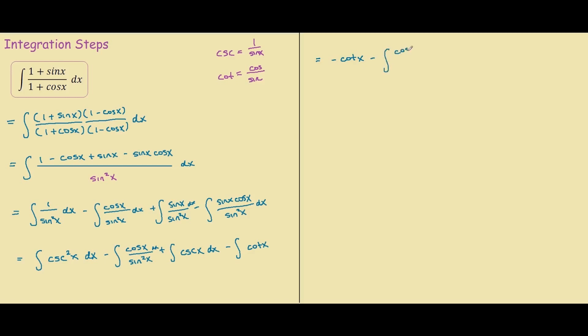The integral of cosecant x is negative ln of cosecant x plus cotangent x.